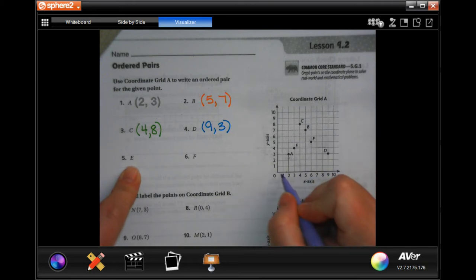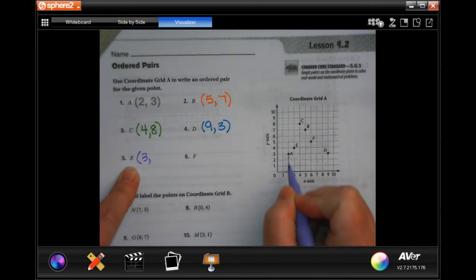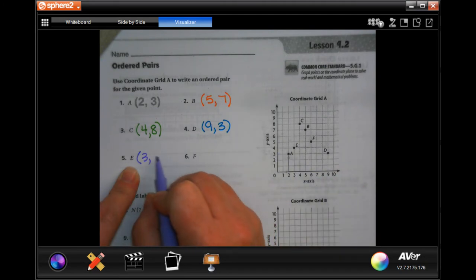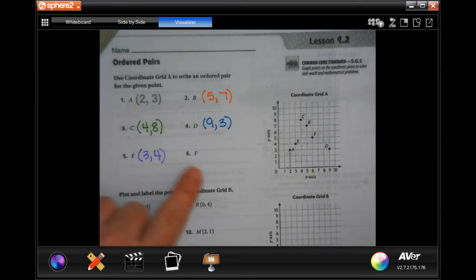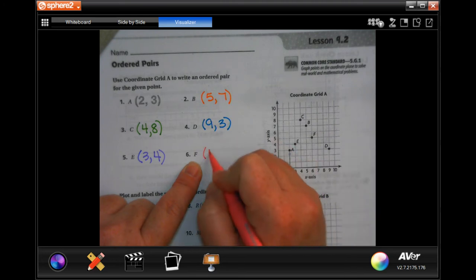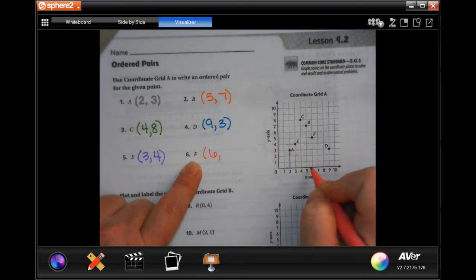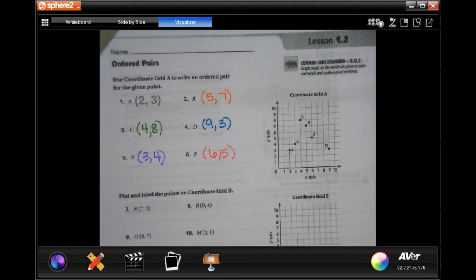For E, we went over three and up four. And for F, we went over six and up five. That's all you have to do.